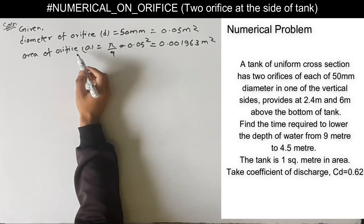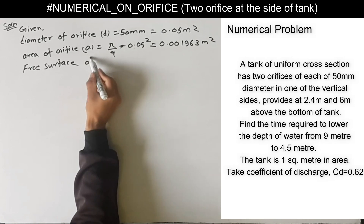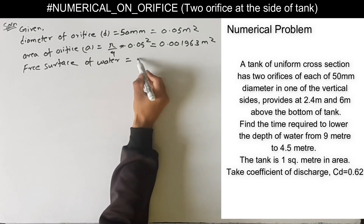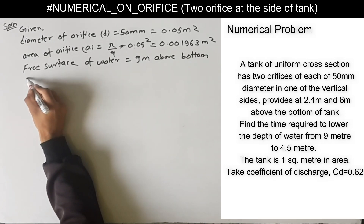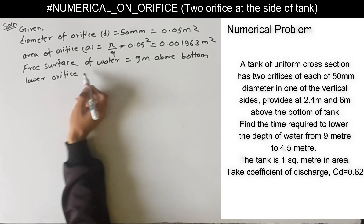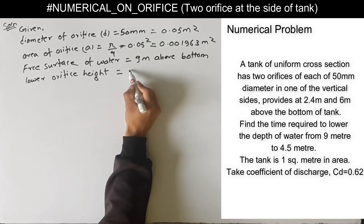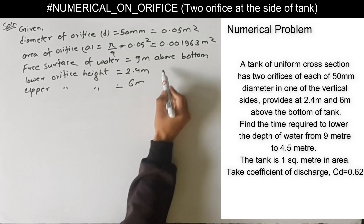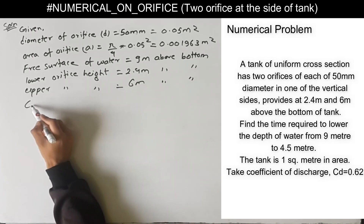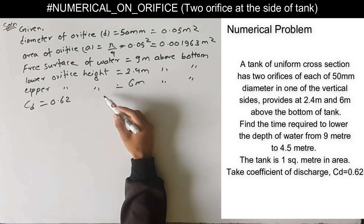Other given data: one orifice is 2.4m above and another orifice is 6m above the bottom of the tank. The free surface of water is 9m above the bottom of the tank. The lower orifice height is 2.4m, the upper orifice height is 6m above the bottom of the tank, and the coefficient of discharge Cd is 0.62. We have to find the time to fall the level of water from the free surface to 4.5m.